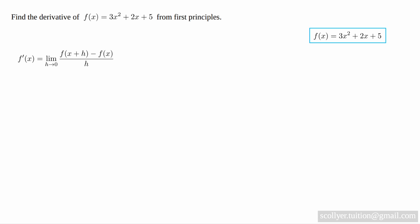Here, f(x) = 3x² + 2x + 5. So, f(x + h) = 3(x + h)² + 2(x + h) + 5.